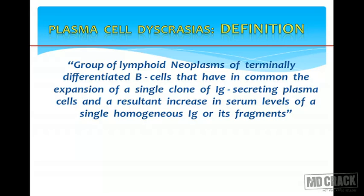The definition goes like this: it is a group of lymphoid neoplasms of terminally differentiated B cells that have in common the expansion of a single clone of immunoglobulin-secreting plasma cells, and the resultant increase in serum levels of a single homogeneous immunoglobulin or its fragments. It is mainly a cancer of terminally differentiated B lymphocytes that secrete a single clone of immunoglobulin, with raised serum levels of homogeneous immunoglobulin and sometimes even its fragments.